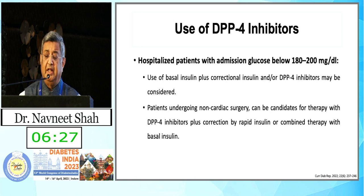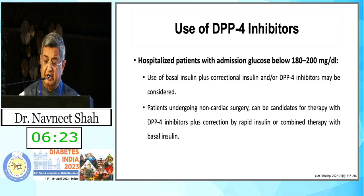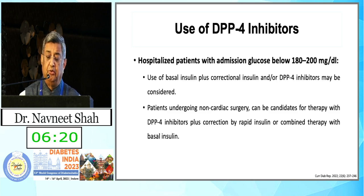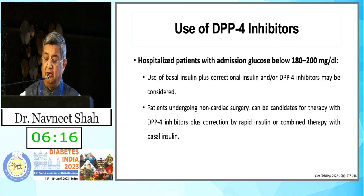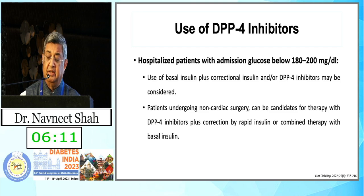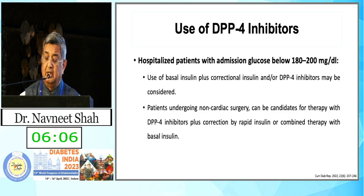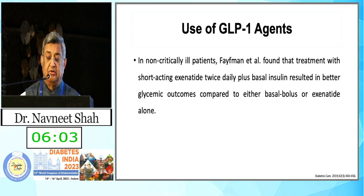In hospitalized patients with admission glucose below 180 to 200 mg/dL, the use of basal insulin plus correctional insulin and/or DPP-4 inhibitors may be considered. Patients undergoing non-cardiac surgery may also be candidates for DPP-4 inhibitors plus correctional rapid insulin or basal insulin therapy.